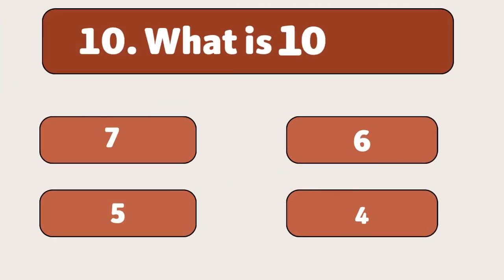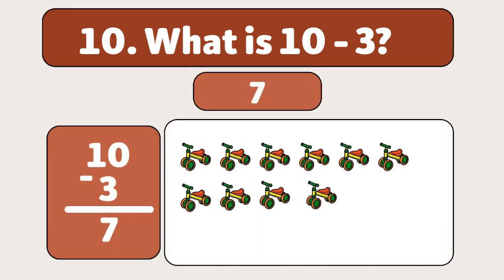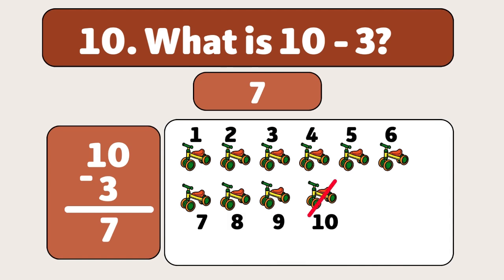What is ten minus three? The answer is seven. We start with ten bicycles and take away three. Let's count. One, two, three. We have seven bicycles now.